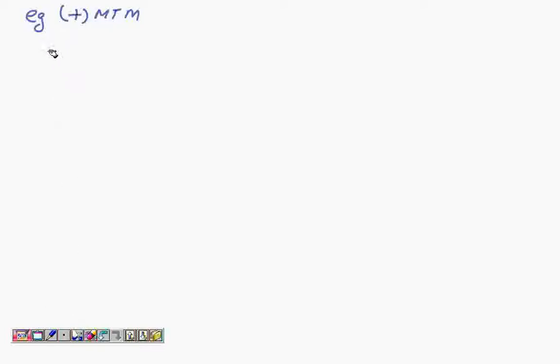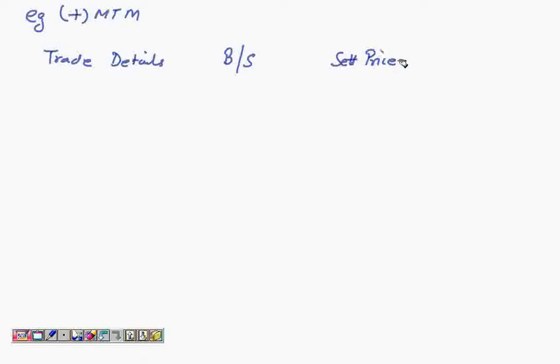We're looking at a positive MTM — meaning the clearing member or trading member is in profits. Let's make a table with the trade details, the bought or sold criteria, the settlement price, and the MTM calculations. Looking at a criteria where this is bought from the previous day: you bought 10 contracts of 1000 USD at a price of 40, and the settlement price today is 43.